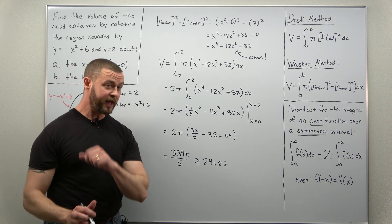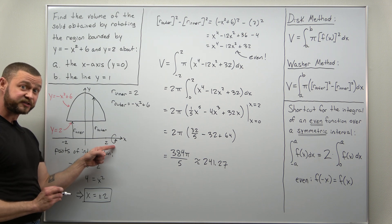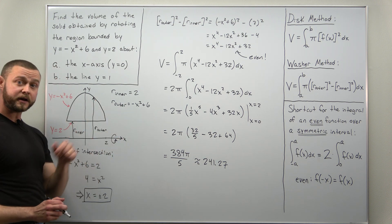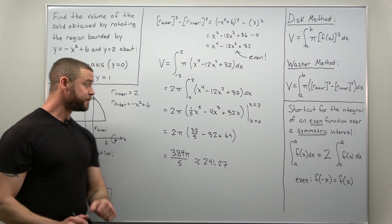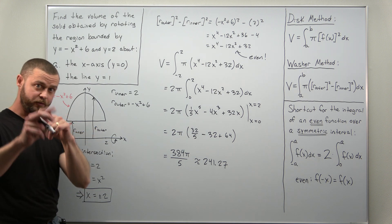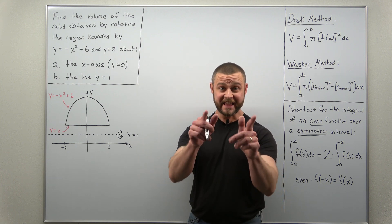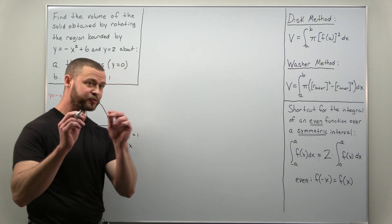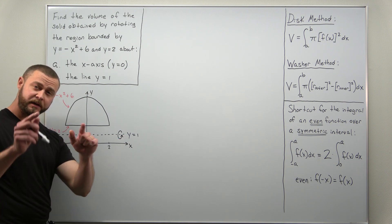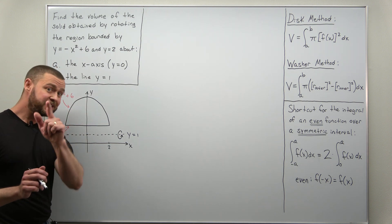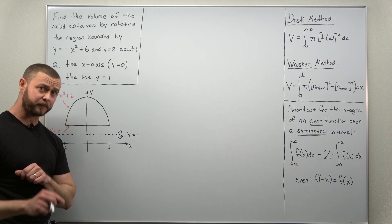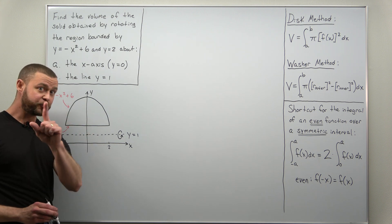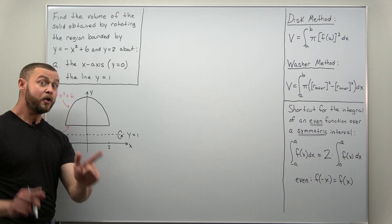That completes part a, where we rotated the region about the x-axis, or the line y equals zero. It was straightforward to determine r outer and r inner. Now for part b, the only change is the axis of rotation — we move it up one unit. Instead of rotating about the x-axis, we rotate about the horizontal line y equals one. This makes the region closer to the axis of rotation, so we should expect a smaller volume compared to part a.